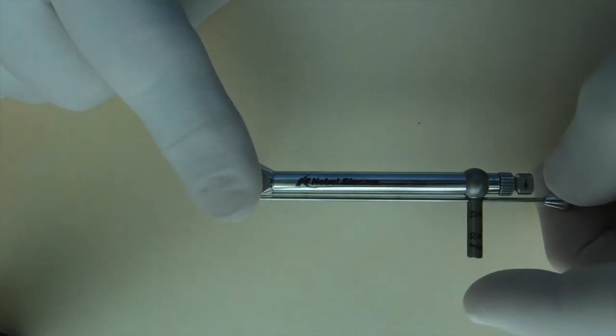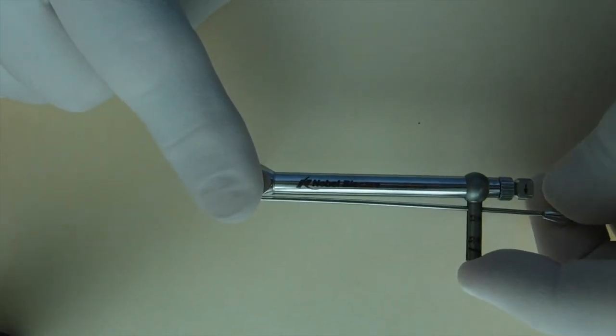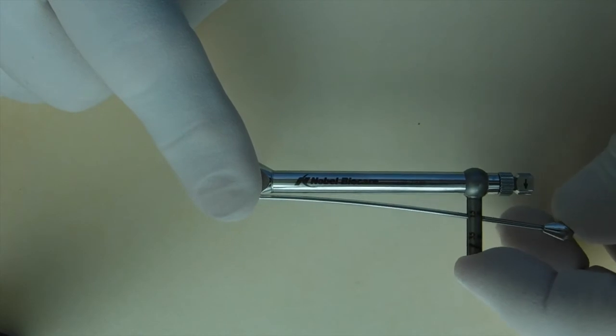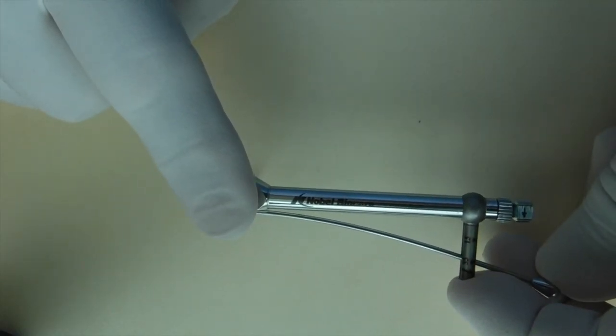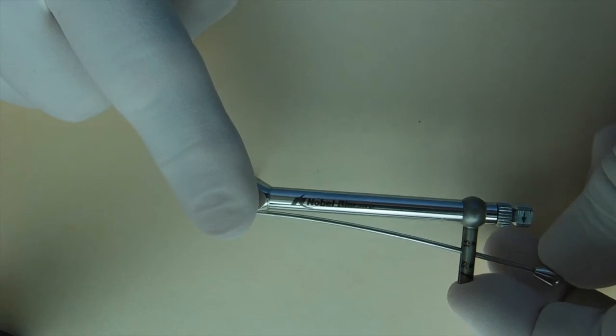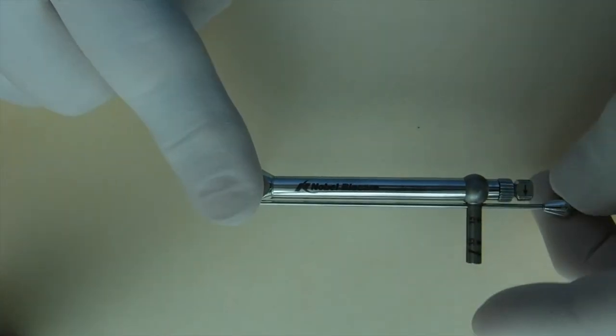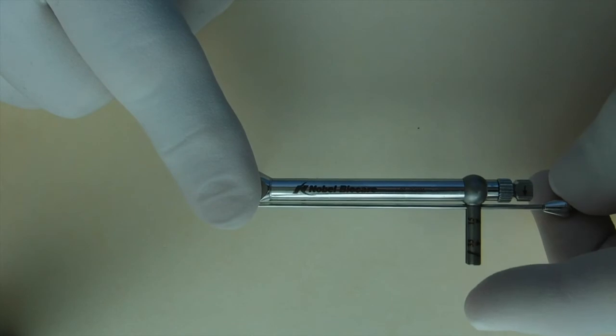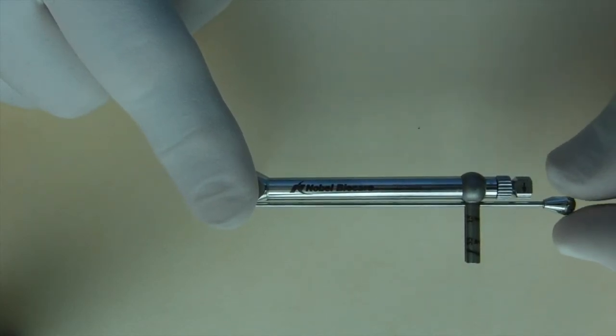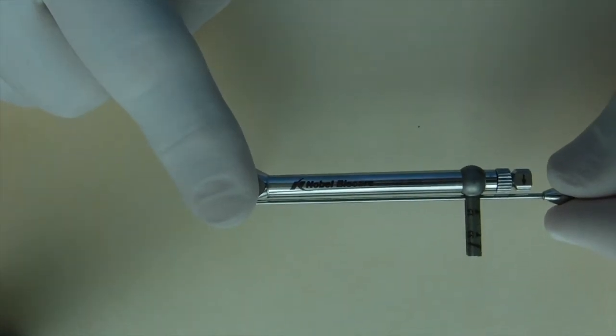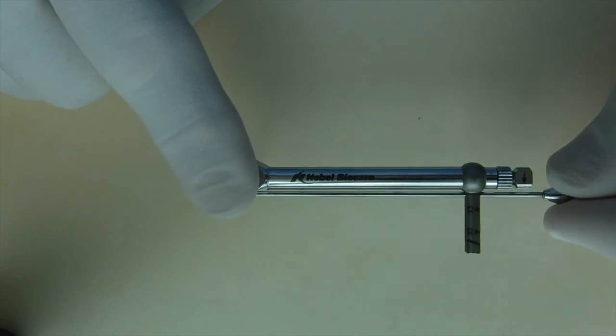As the torque force is applied, the beam will deflect until it reaches the desired torque value, in this case 35. My finger is only on the indicator bar for the purpose of the demonstration. It's very important that you only keep two fingers on the slender lever arm.